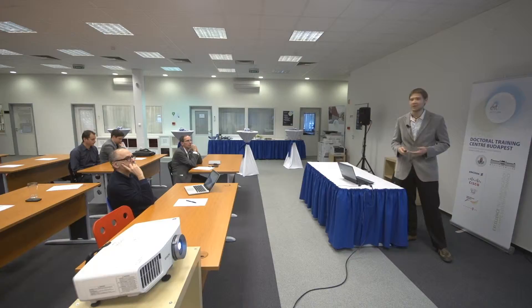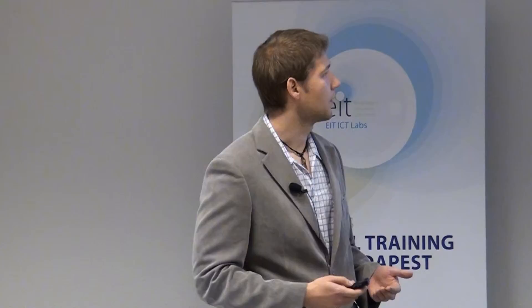At this point, the question may arise: why is it important to gain a deeper insight into the effects of the routing policy? The answer is that in every network where there is communication, there is a routing policy. There are a lot of networks which can be mentioned — for example, social networks, cellular and neural networks, and also the internet at the level of the autonomous systems.